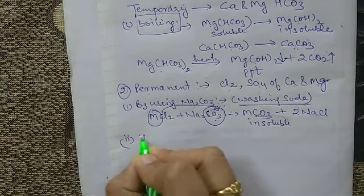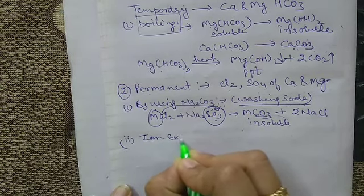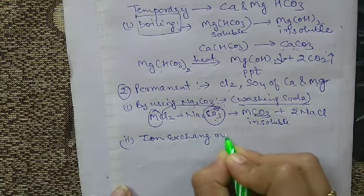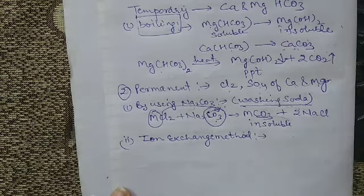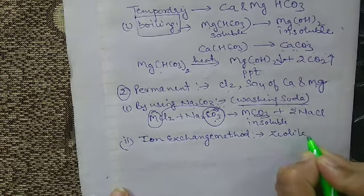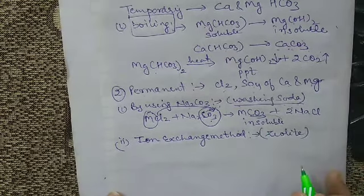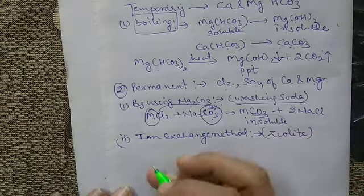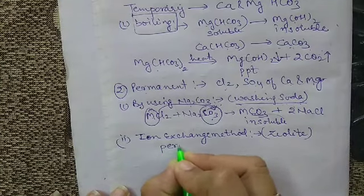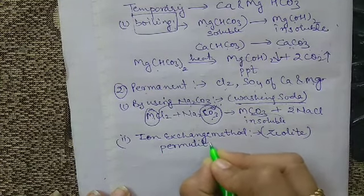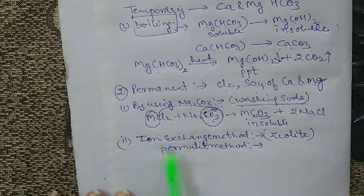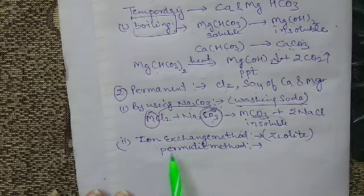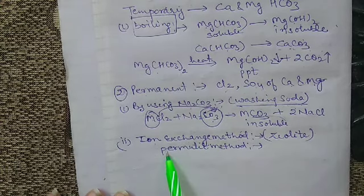The second technique is the ion exchange method, also called the zeolite method or the permutite method. The material used is hydrated sodium aluminium silicate, with formula NaAlSiO₄.